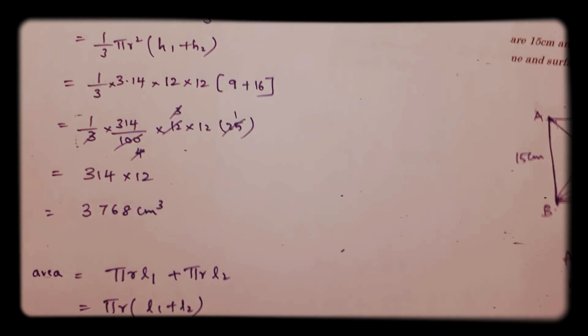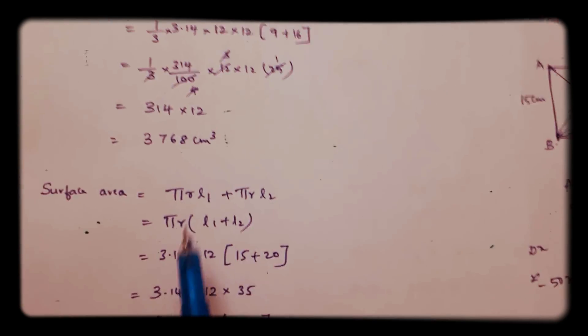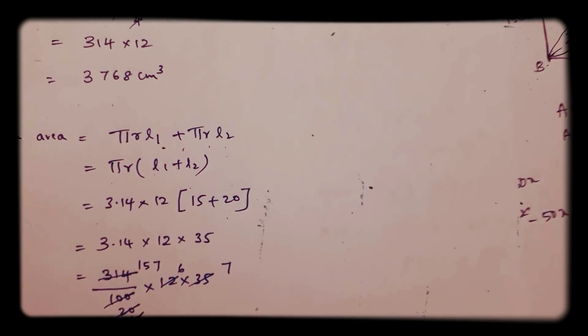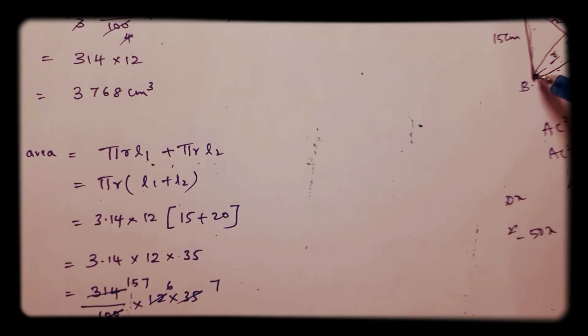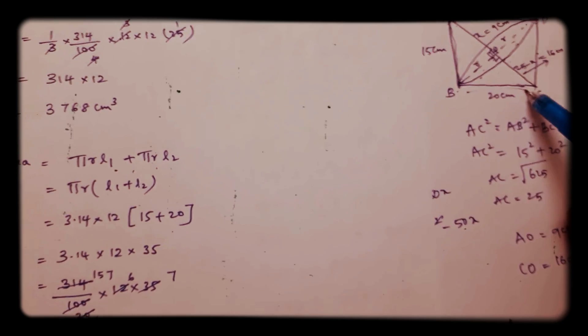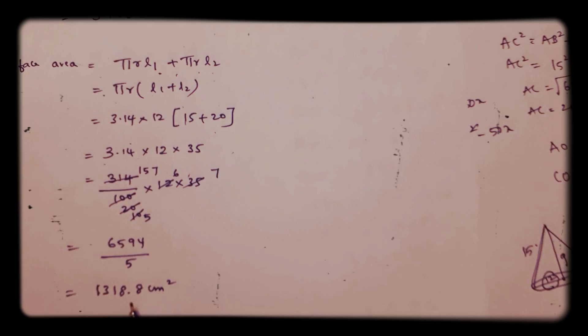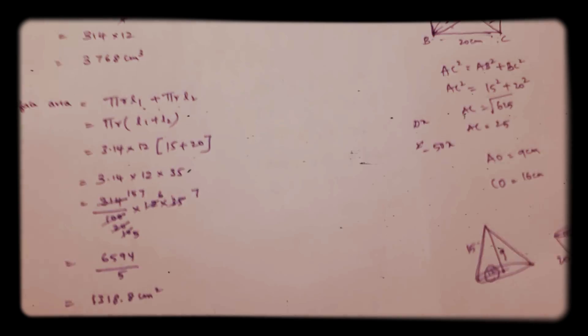Curved surface area means curved surface area of the top cone and the bottom cone. The total is π R L₁ plus π R L₂. π R if we take common, L₁ plus L₂. Here slant height is 15, here it is 20. So 15 plus 20 is 35. On calculating I got 1318.8 cm².